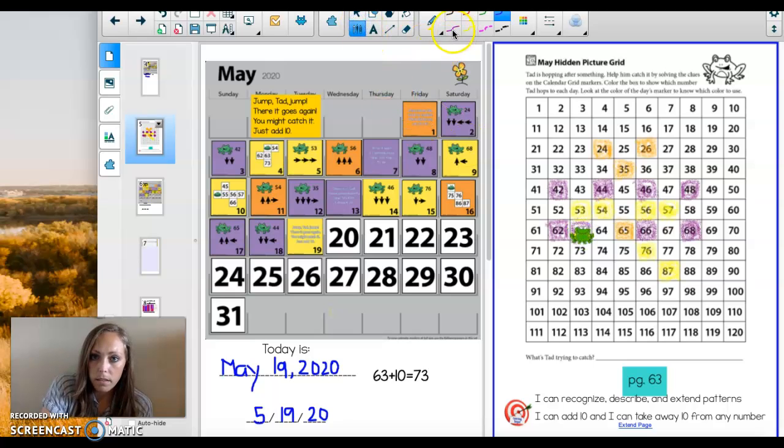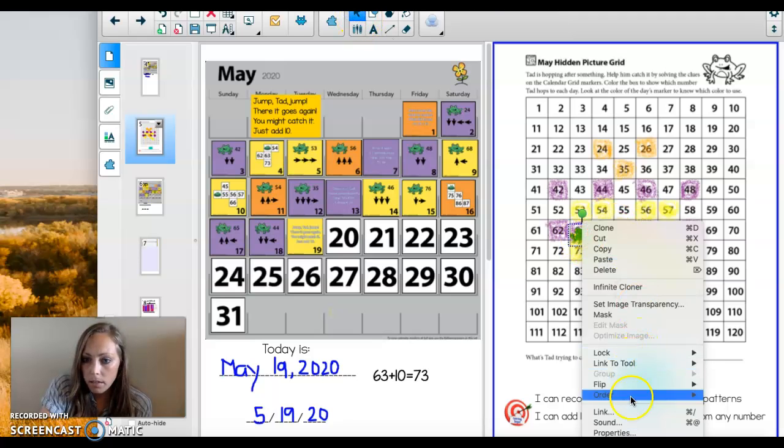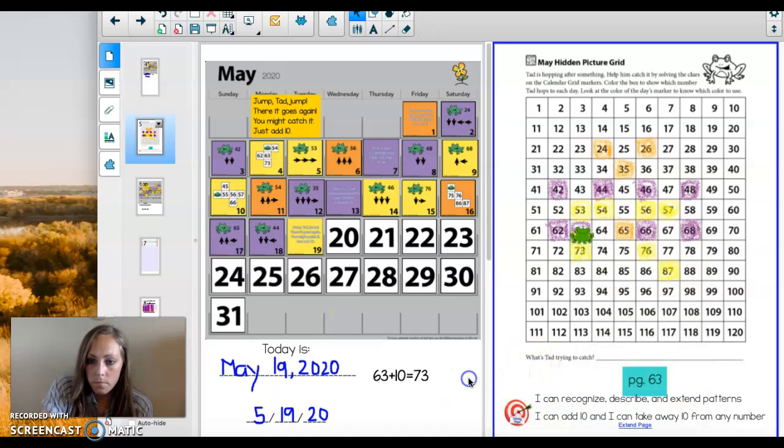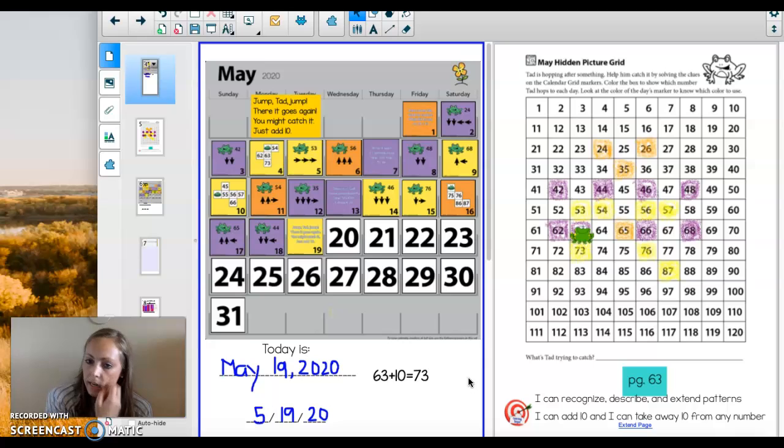Now we need to color it in, and it should be yellow for today. Sorry friends, I've been trying to get rid of these hiccups for so long. I figured I better just record the lesson anyways. Make sure you have your yellow crayon and you're coloring in the 73 with yellow. What is this picture turning into? Do you guys have predictions?